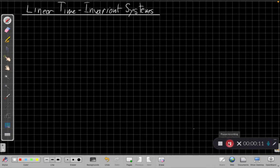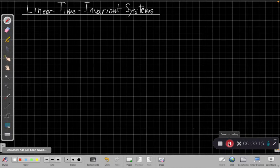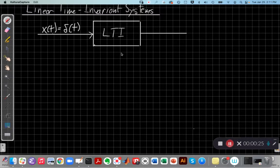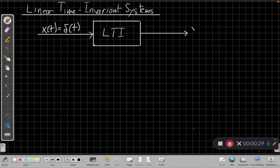Linear time invariant systems have this remarkable property that if I know the response to just one input, I can find the response to any input. When I have an impulse for the input, the output we call the impulse response, is a special case, so it gets its own name, H of T.